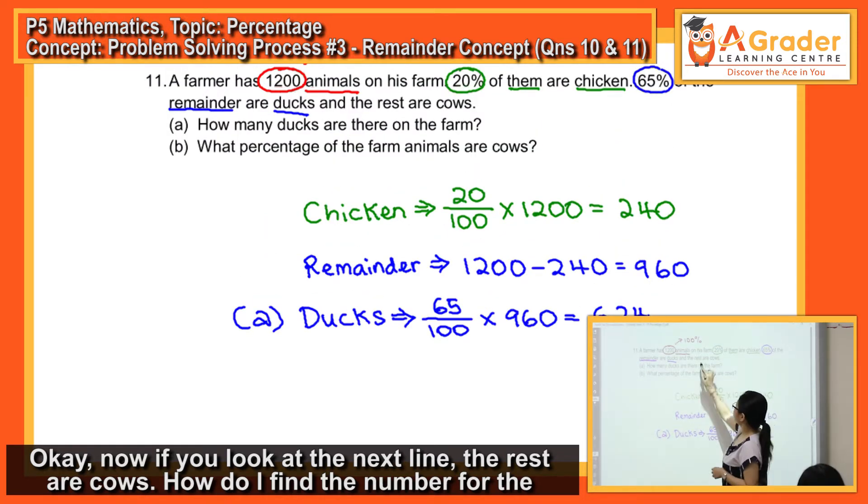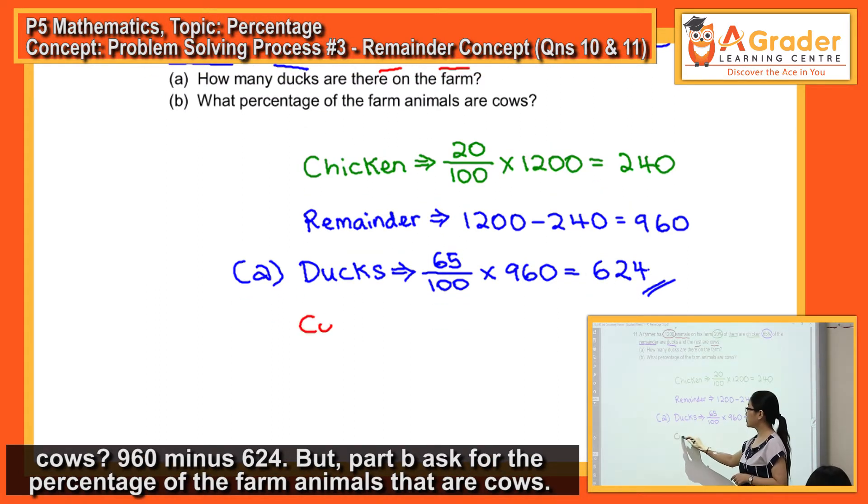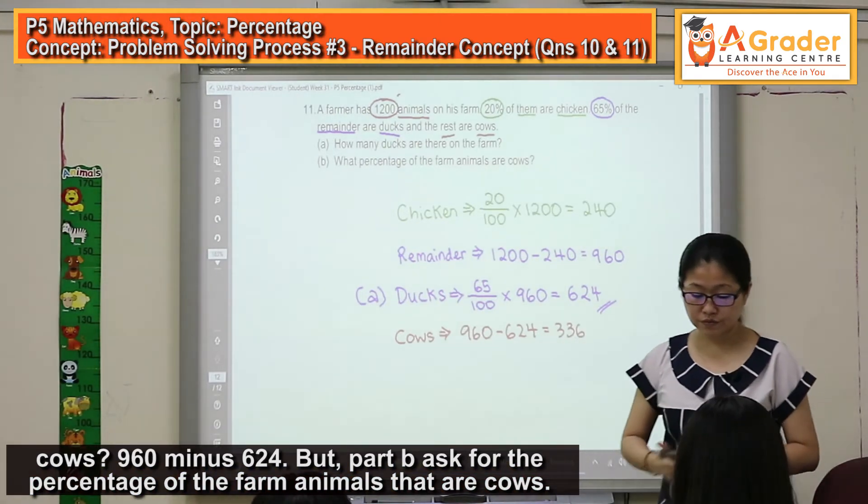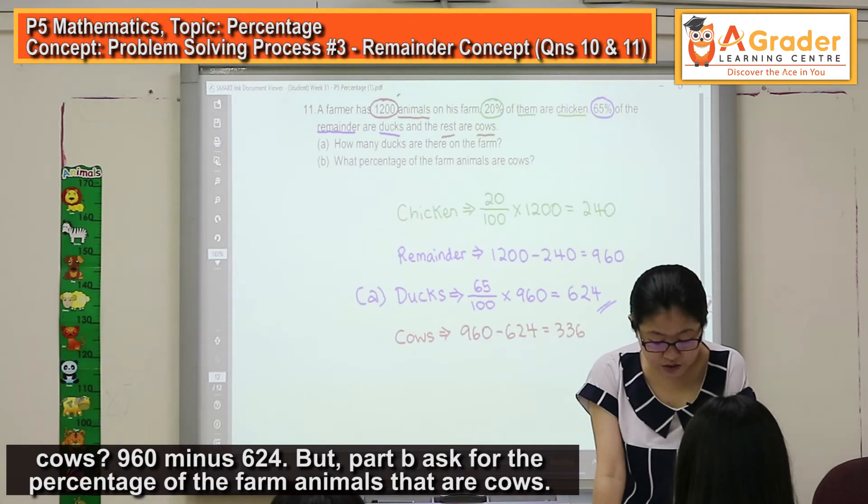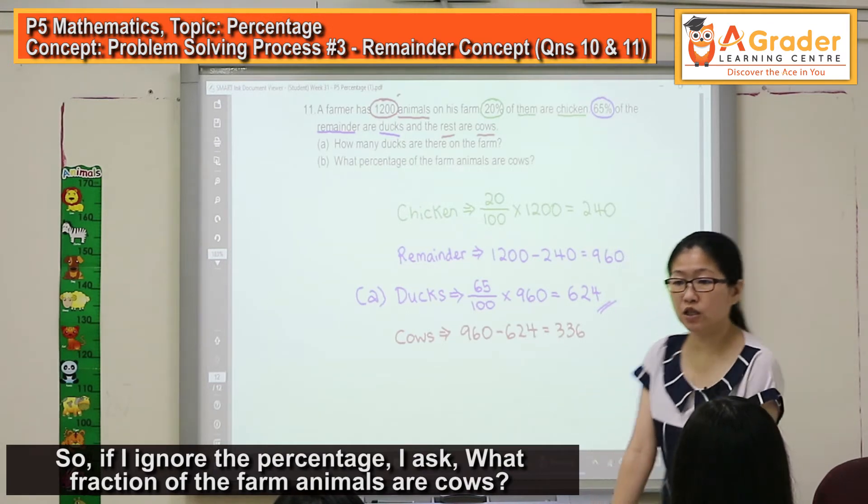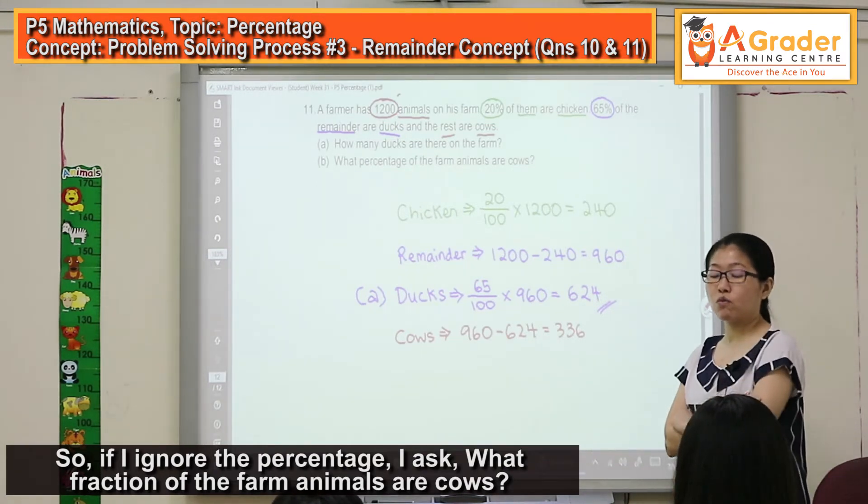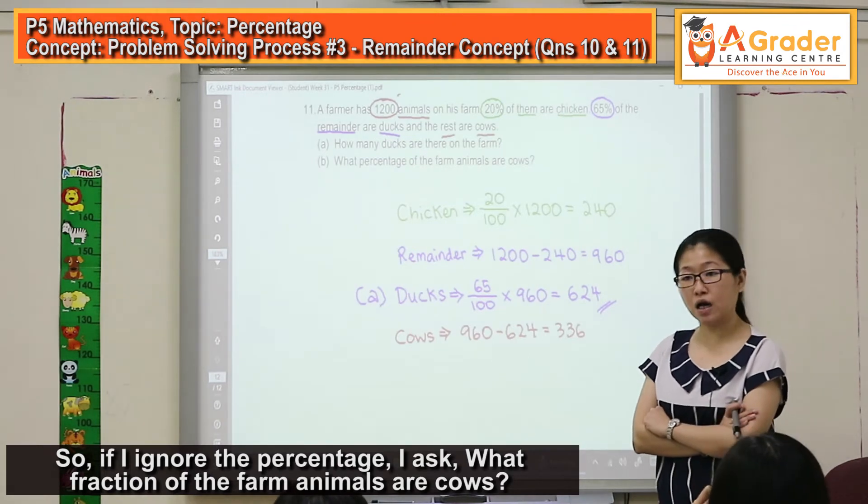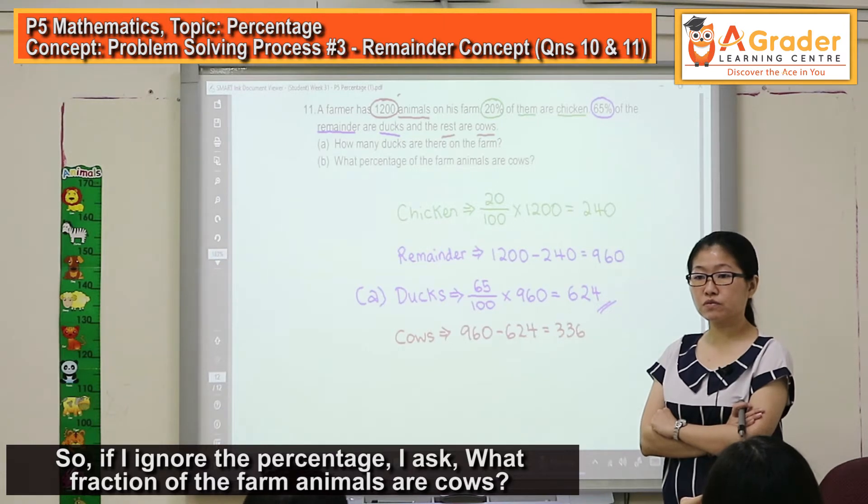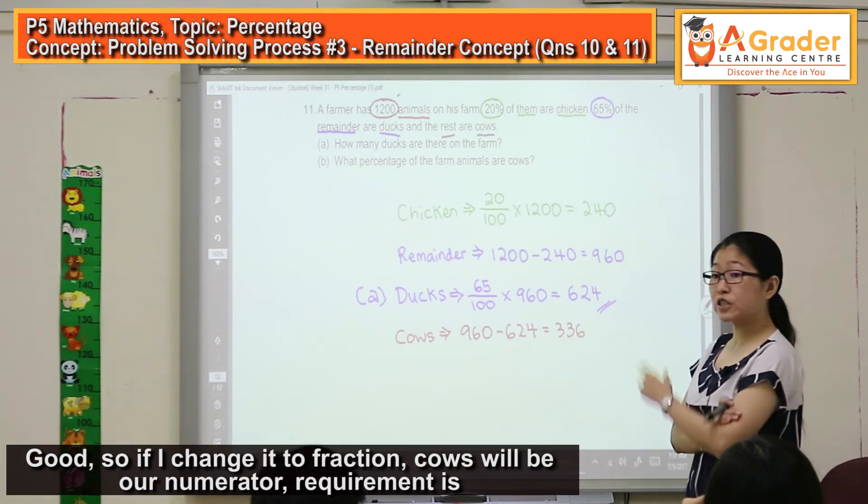Okay, now if you look at the next line, the rest are cows. How do I find the number for the cows? 960 minus 624. But part B asks for the percentage of the farm animals that are cows. So if I ignore the word percentage, I ask: what fraction of the farm animals are cows?